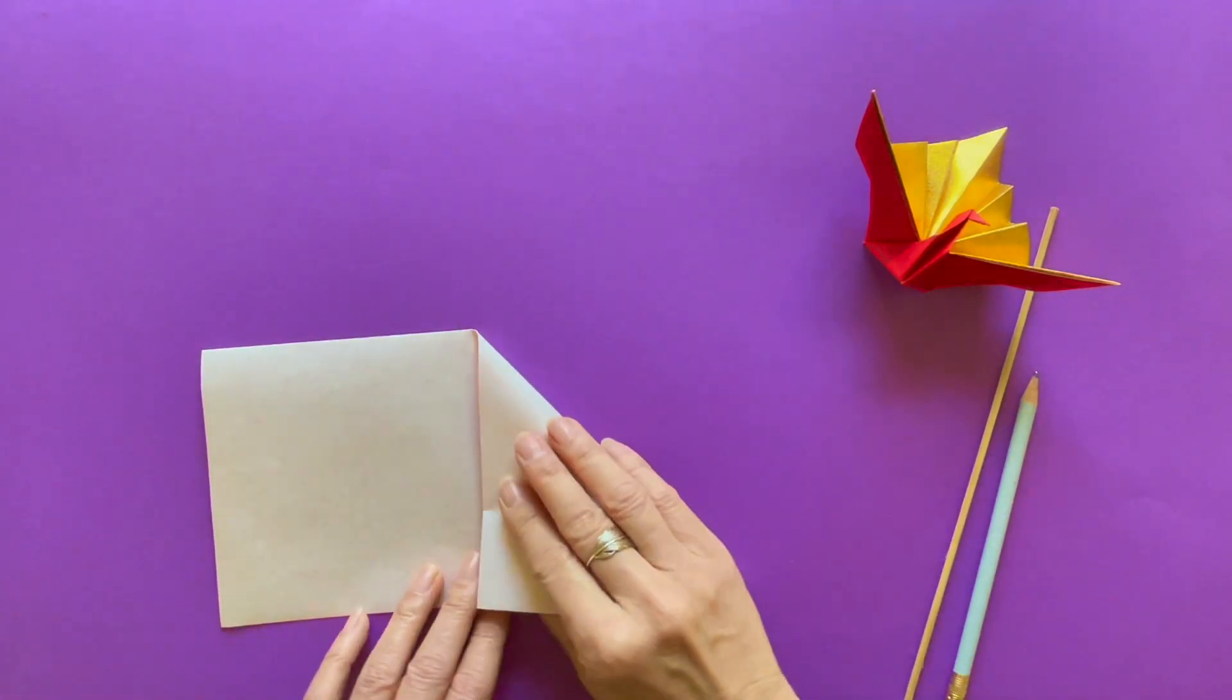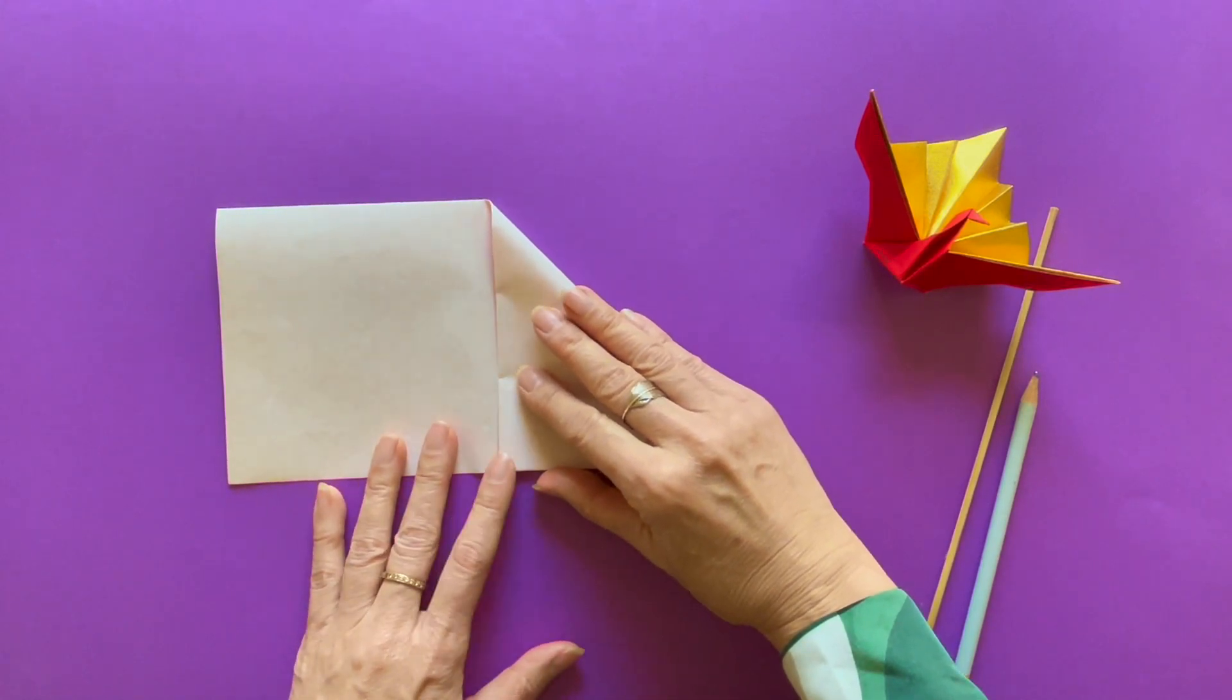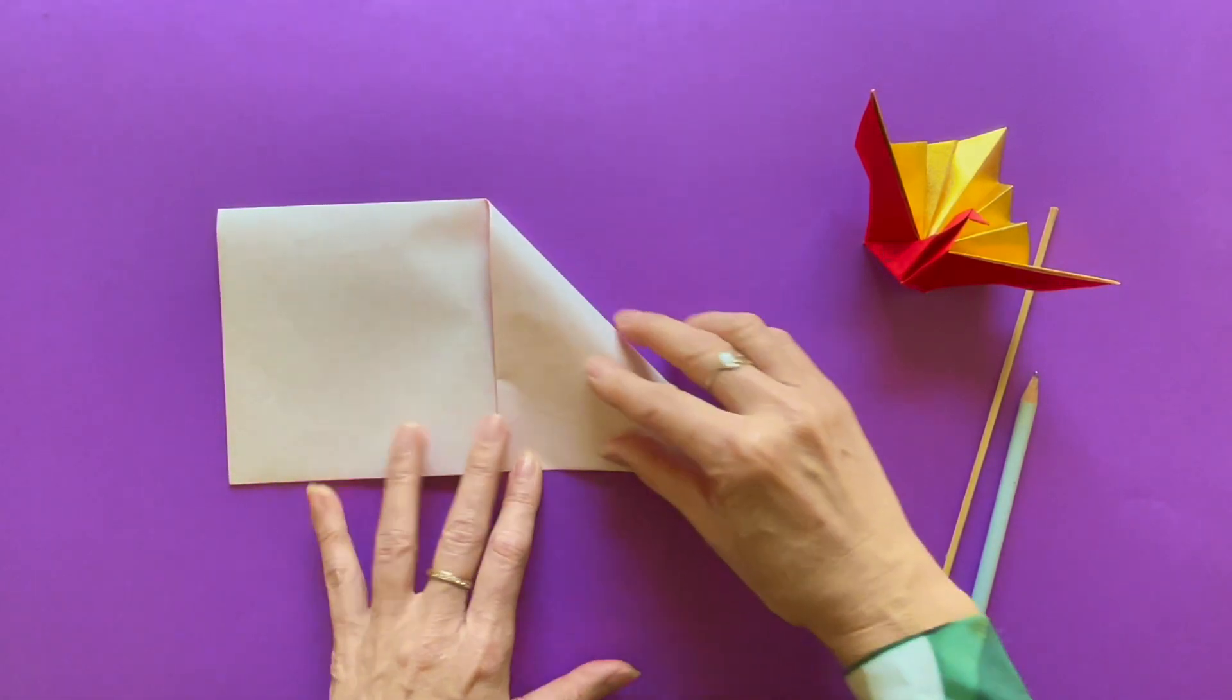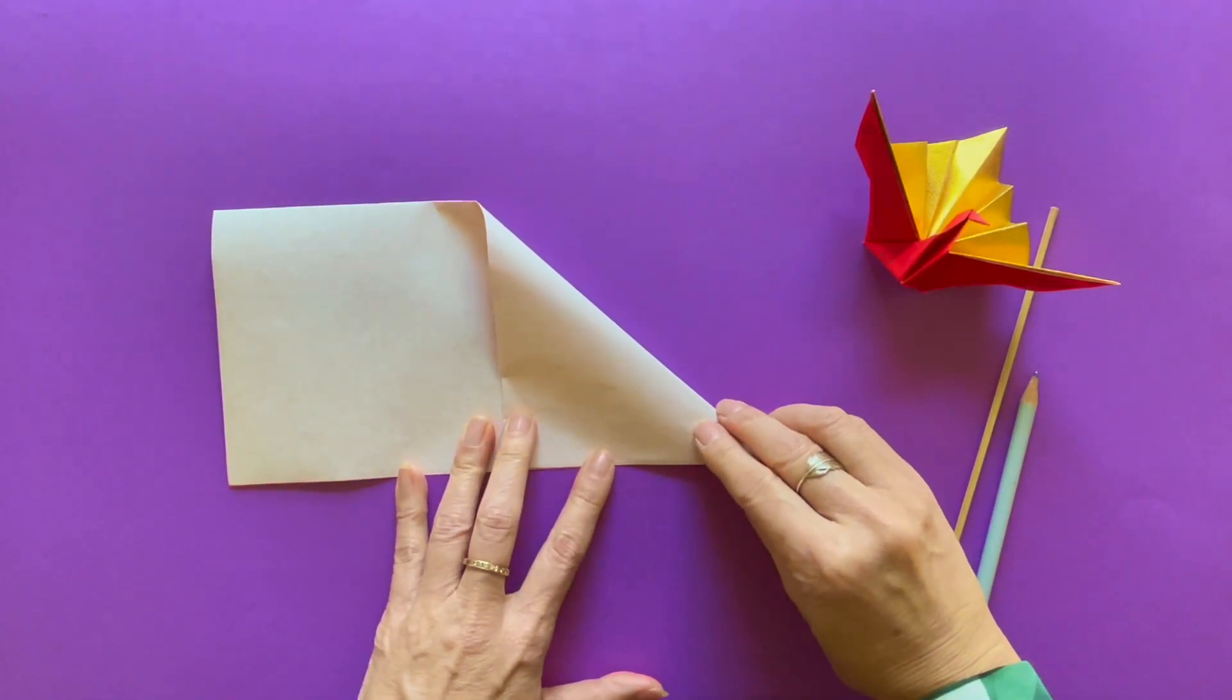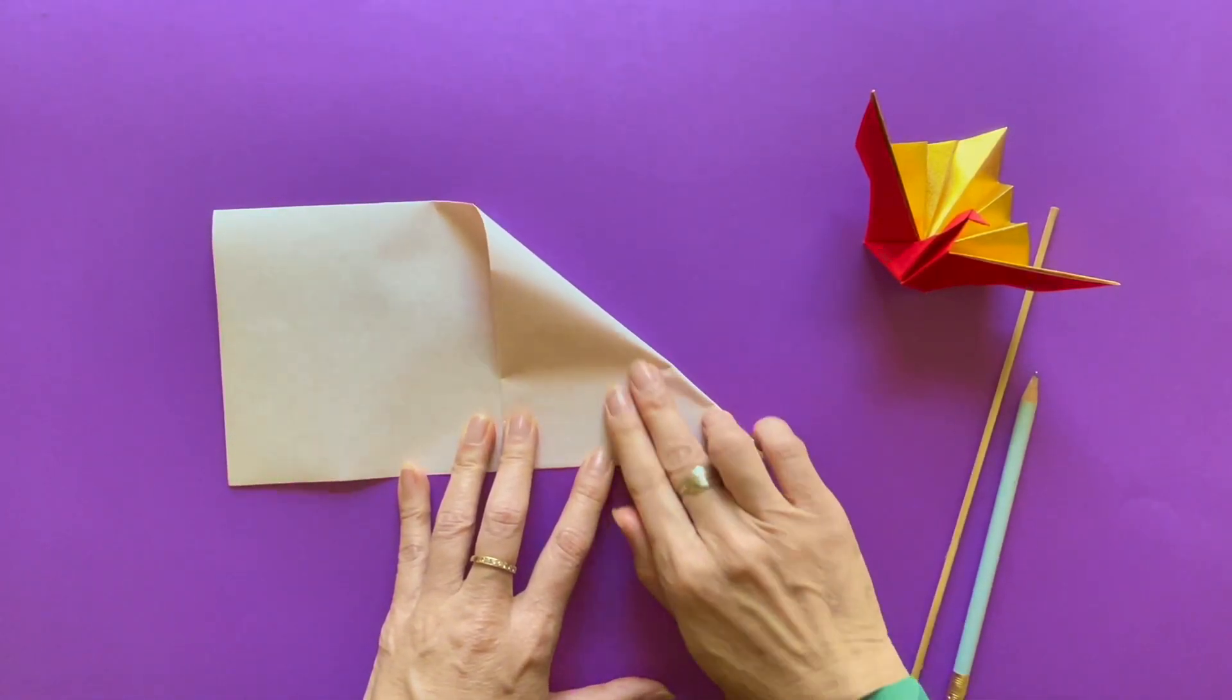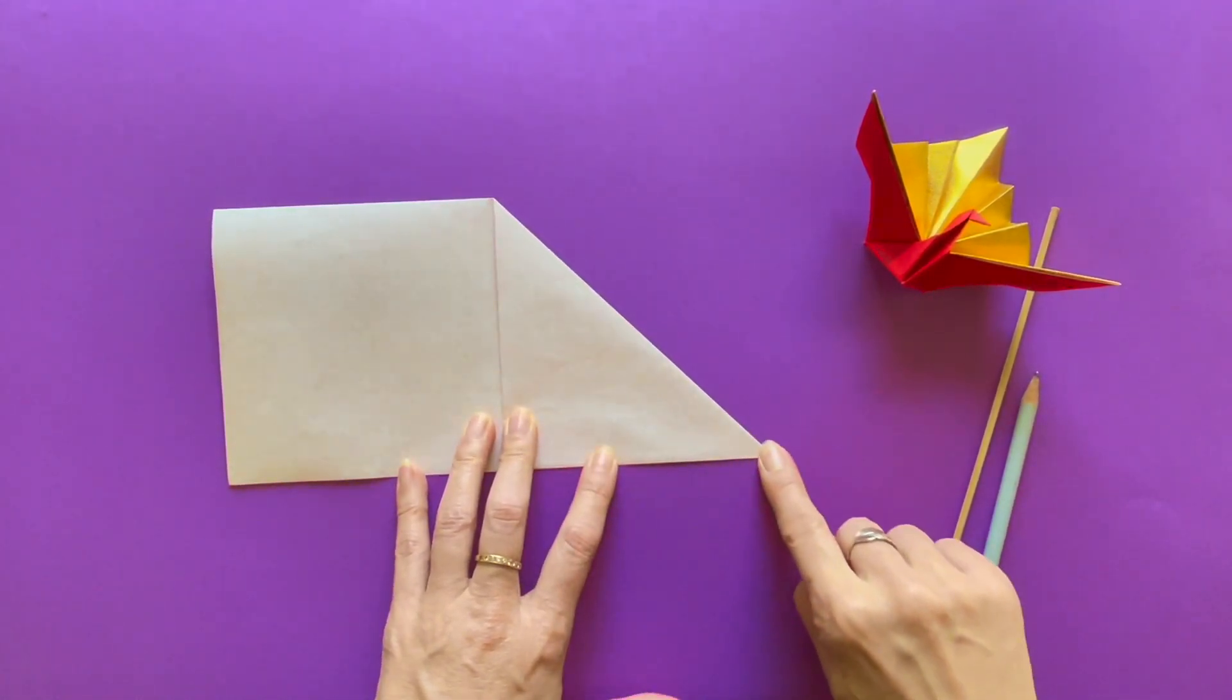And from the right top corner, fold to the vertical center crease. It's a triangle shape and try to make it as precise as possible.